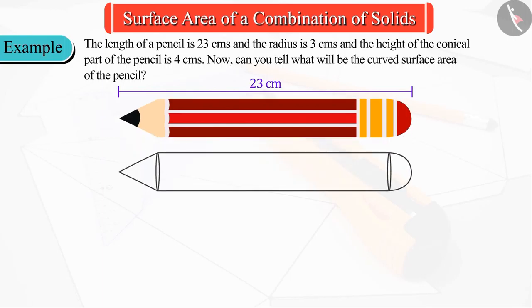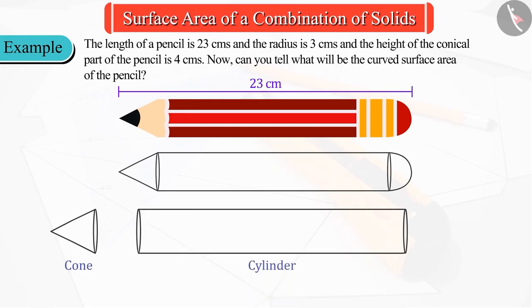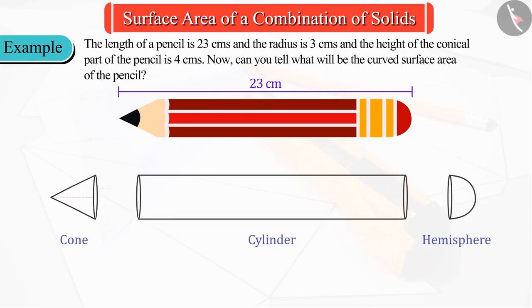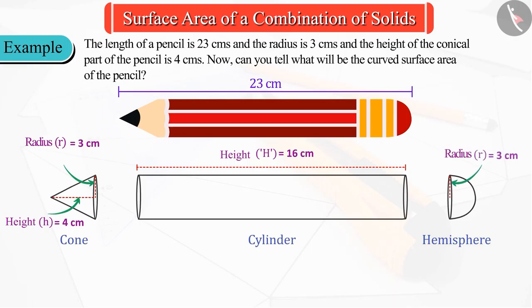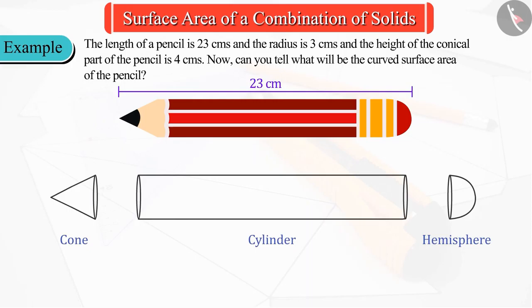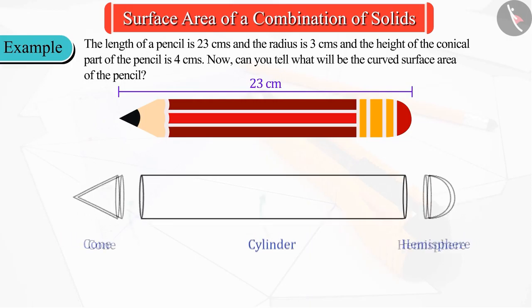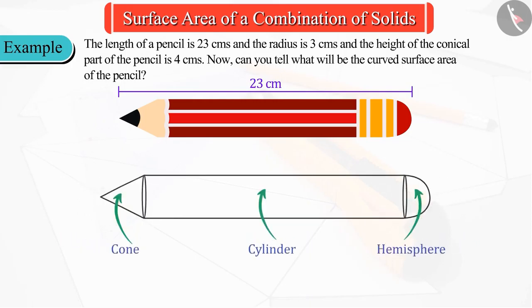If we look at the figure carefully, we can say that its front part is a cone, middle part is a cylinder, and the lower part is a hemisphere. The height of the conical part is 4 centimeters, radius is 3 centimeters, the length of the cylinder is 16 centimeters, and the radius of the hemisphere is 3 centimeters. Thus, this entire figure is made up of a combination of three figures.